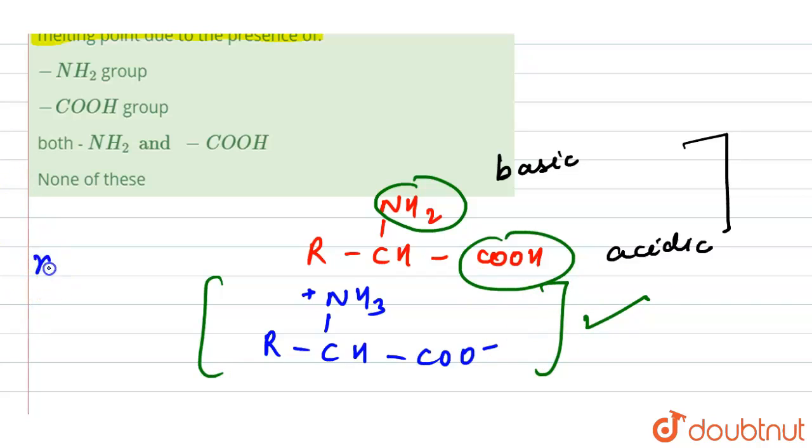How do they neutralize each other? By the transfer of a proton from the carboxyl group to the amino group. So they exist as a neutral dipolar ion.